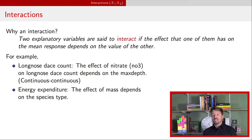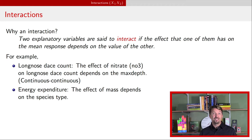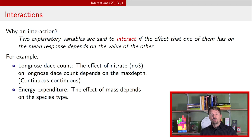The next example looks at energy expenditure of animals in flight — specifically birds and bats. We're wondering about the effect of mass of those individuals on their energy expenditure, and whether that effect of mass depends on species type. If we think the effect of mass depends on the type, then we should have an interaction. In this case, only mass is continuous and type is categorical, so we have a continuous-categorical interaction.